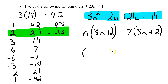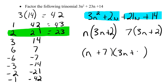The first binomial comes from the pulled-out factors: n and positive 7, giving us (n plus 7). The second binomial is the matching bracket: (3n plus 2). So factoring 3n squared plus 23n plus 14 gives us (n plus 7)(3n plus 2). Decomposition has a few steps and takes a little longer, but it will get you the right answer every single time.